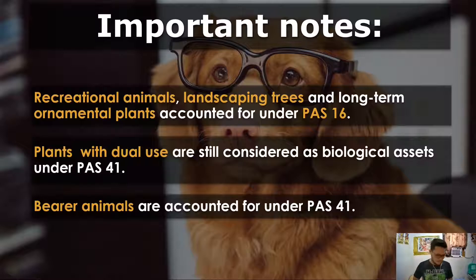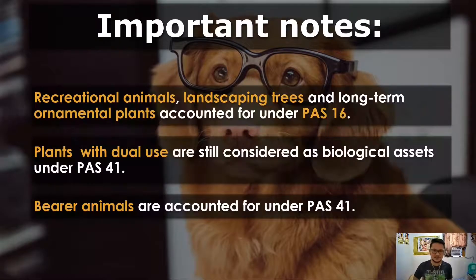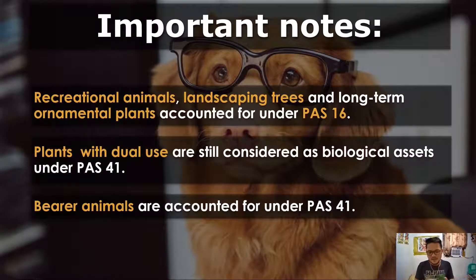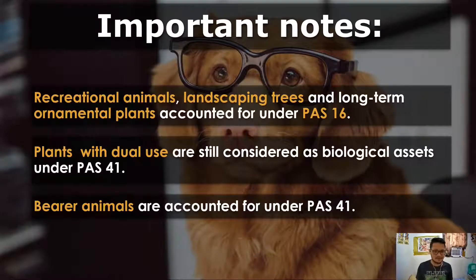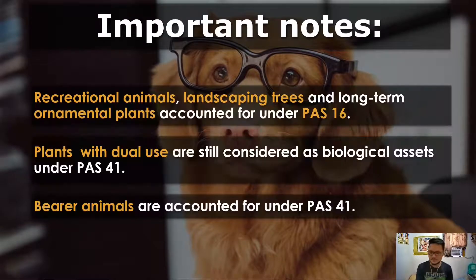Bearer animals: you raise an animal just to produce more animals — like a sow giving birth to piglets. On a farm, a designated breeding sow is grown specifically to give more offspring. But nevertheless, bearer animals are still accounted for under PAS 41, unlike bearer plants.